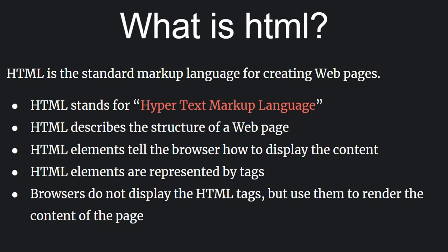Browsers do not display the HTML tags themselves — they use them to render the content of the page. When you write content in an HTML file and use a tag, the tag is used to render the content; the browser will not display the tag directly on the screen. Each tag has its own significance — the tag will not be displayed on the screen, but the contents within the tag will be.